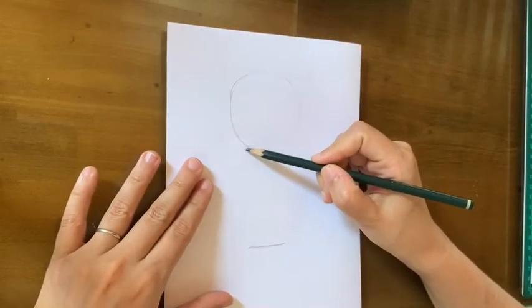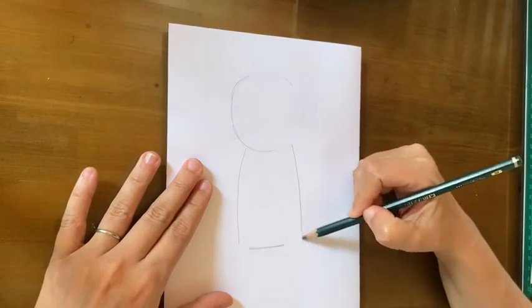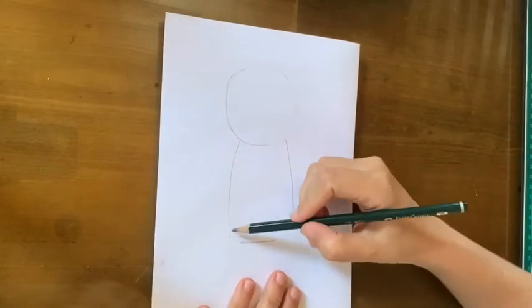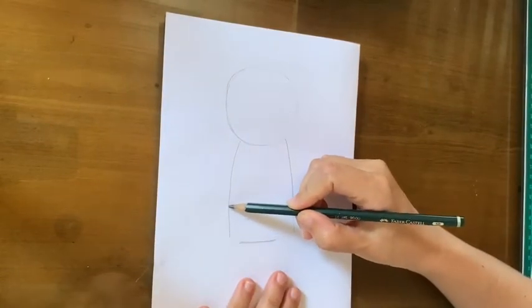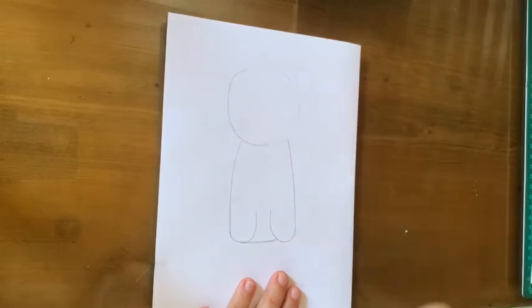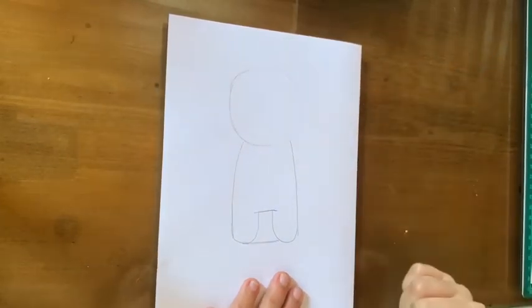I just start making my body by breaking two lines down, almost like a wooden doll. This way. Now I can connect making two letter U's, whoop and whoop, for the legs. And close the legs like this.